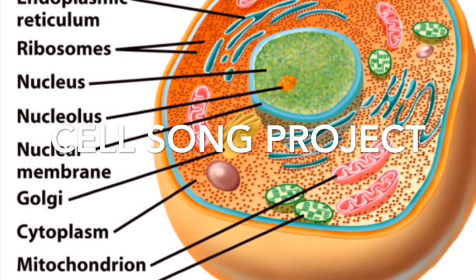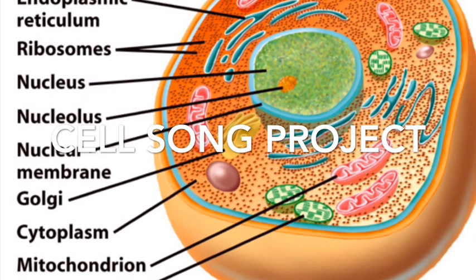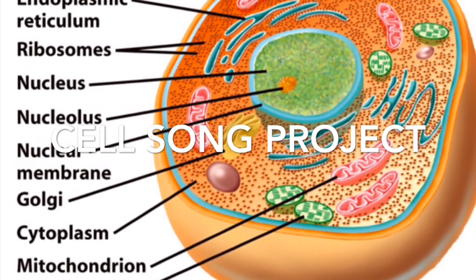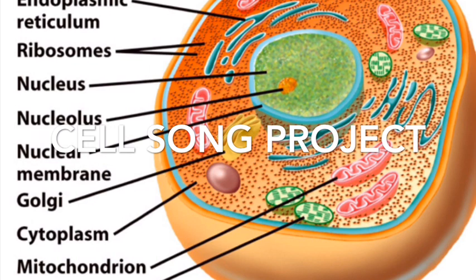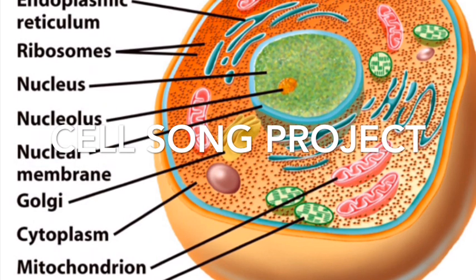The chromatin is the area where the chromosomes are found in the cell, and in the center is the nucleolus.